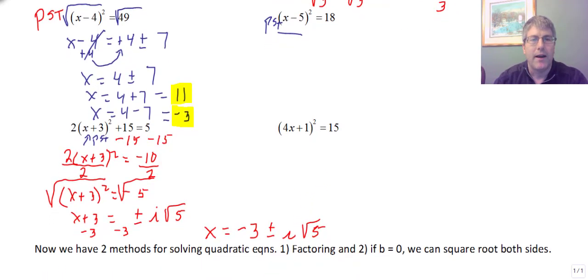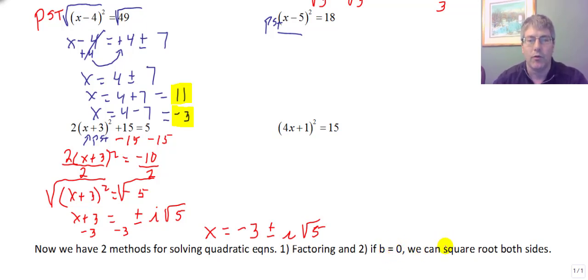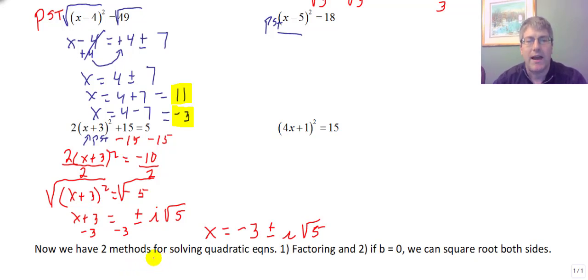One final note: as you can see, we now have two methods for solving quadratic equations. We can factor, and if b equals zero — the coefficient on our linear term is zero — we can square root both sides. So we have two methods for solving for the x-intercepts of a parabola, the roots or the solutions: we can factor, and we can take the square root of both sides. So with that, I will see you in class.